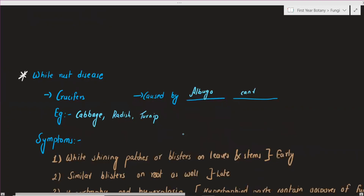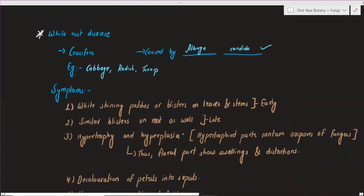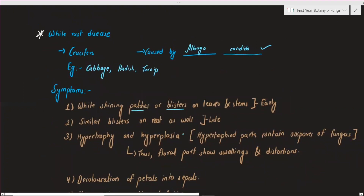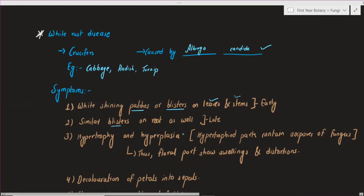So you have a question. First, you have to write: the causative organism is Albugo candida on crucifer plants. What are the symptoms? You have to write a little bit about blisters. First, you have to write about blisters. At the early stage, you have to note blisters or pustules.